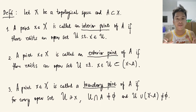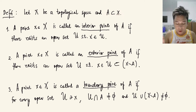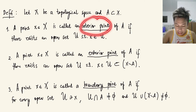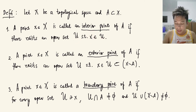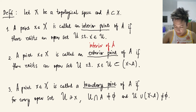We will start first with the formal definition of the interior point, the exterior point, and the boundary point. Given a topological space X and a subset A of X, a point x in X is called an interior point of A if there exists an open set U such that x is an element of U. We call the collection of all interior points of A the interior of A, denoted by a specific symbol — either of two common notations.